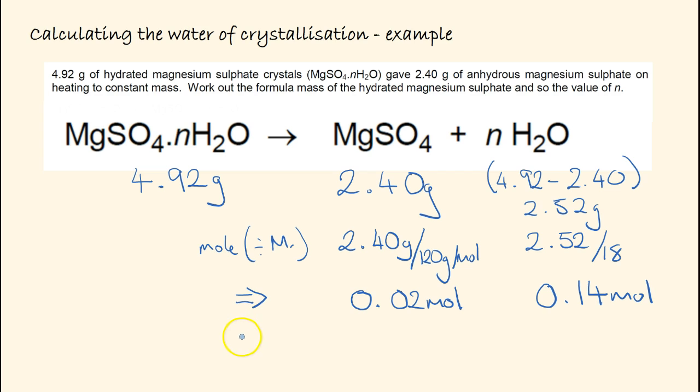Divide by the smallest—the smallest between 0.02 and 0.14 is 0.02. So we end up with 1 for MgSO4. And 0.14 divided by 0.02 is 7 for water. This means our N value is equal to 7.